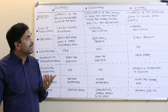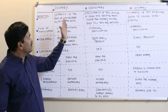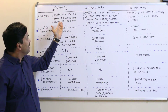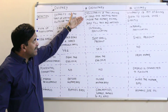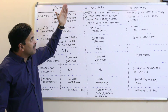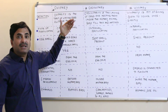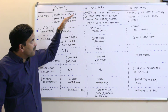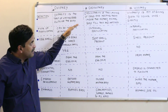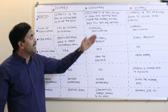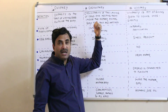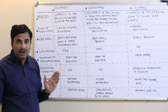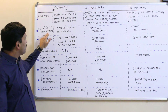In viviparity, the young ones are directly delivered out of the body. So: oviparity is laying eggs outside the body; in ovoviviparity, eggs remain within the mother's body until hatched; and in viviparity, the young ones are delivered directly.